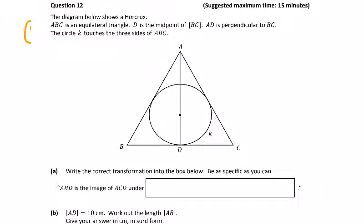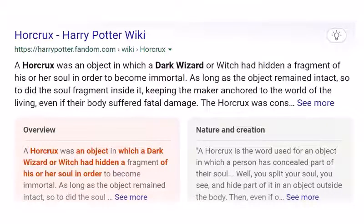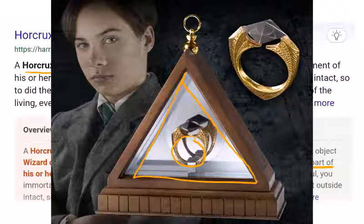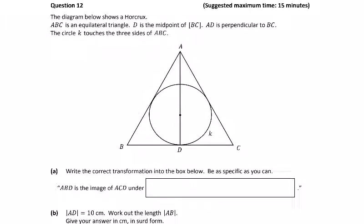Question 12: The diagram below shows a Horcrux, and you all know exactly what a Horcrux is because of Harry Potter. A Horcrux was an object in which a dark wizard or witch had hidden a fragment of his or her soul in order to become immortal. Here is where the triangle and the circle inside it come from. ABC is equilateral, so all sides and all angles are equal and measure 60 degrees.